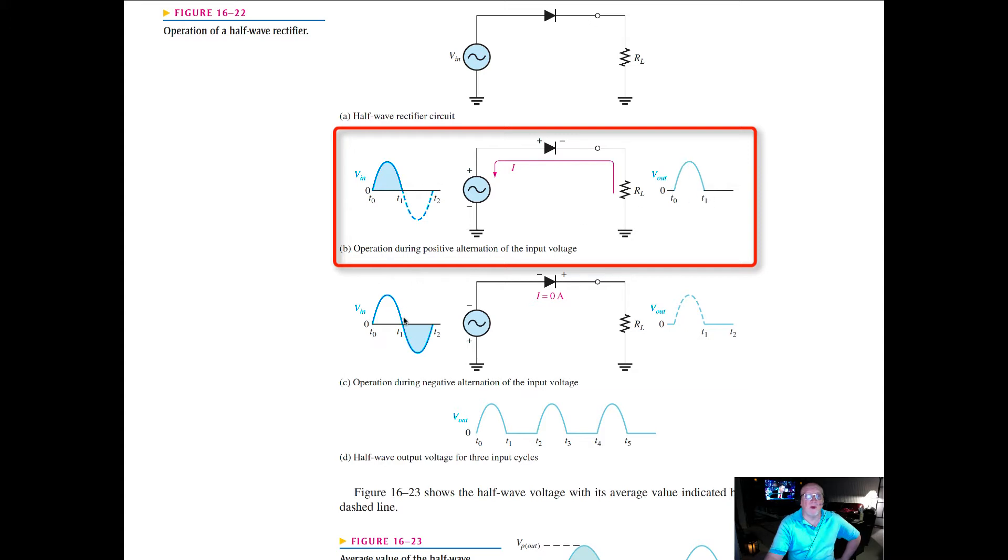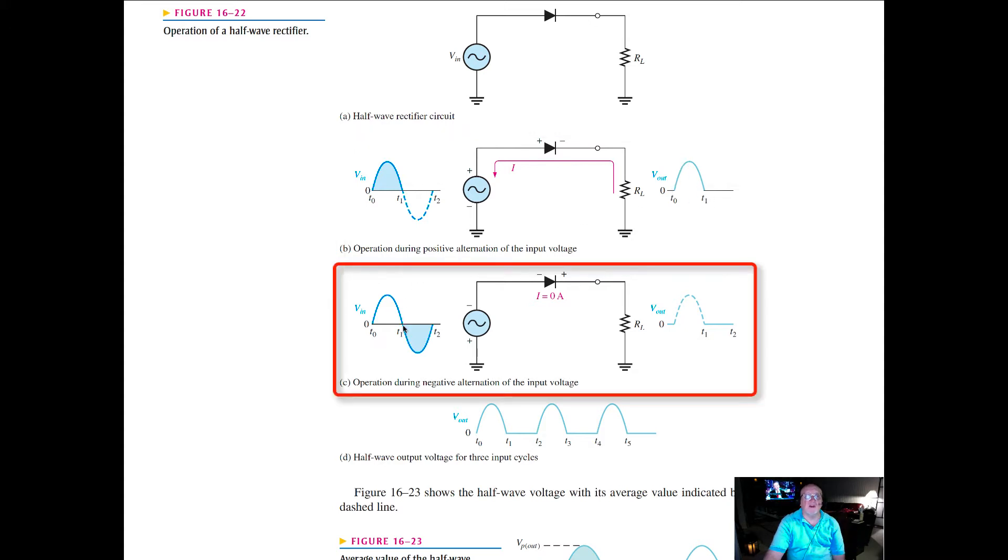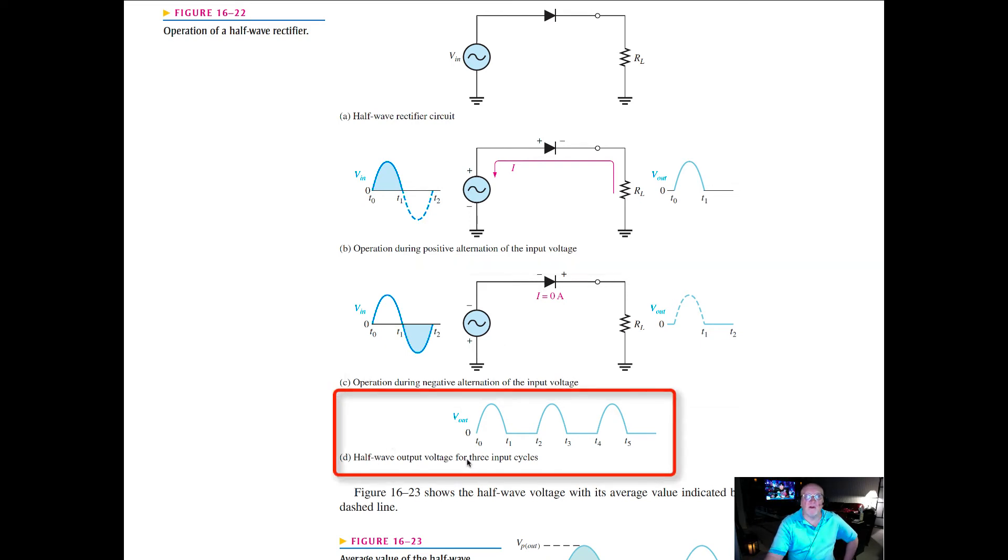When the sinusoidal input goes negative, we drive the diode into reverse bias, non-conducting, and what happens here is we get nothing out, essentially, because current is not allowed to flow. So what we get here then is a half wave output for, in this case, three alternations.